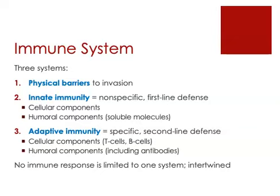Last, we'll talk about adaptive immunity — the parts of the immune system that produce a very specific response. These are the second-line defense mechanisms, and they include both cellular and humoral components. Importantly, it's the adaptive immune system that's responsible for producing antibodies. Remember, there is no immune response limited to just one of these systems — they are very intertwined with each other.